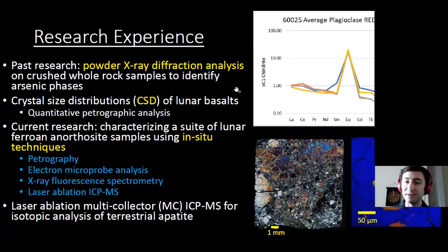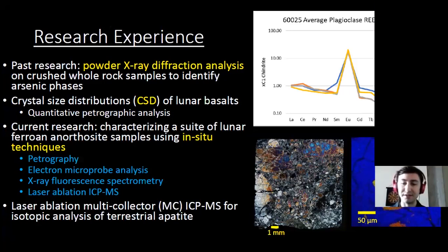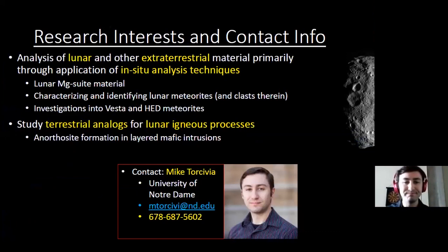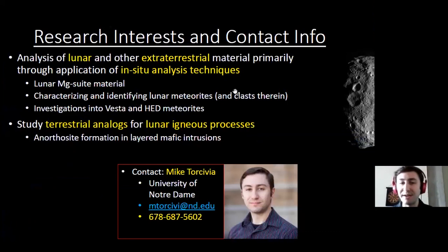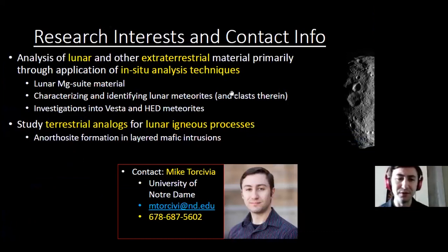On the right we have a few figures. On the top is a rare earth element plot of average plagioclase composition taken from different thin sections of sample 60025. On the bottom left is a photomicrograph of thin section 60025-273, and on the right is a false color image of a pyroxene grain taken using X-ray mapping. My research interests are primarily lunar and other extraterrestrial material, applying different in-situ analysis techniques to better characterize those samples. In the future, I'm looking at moving my project to other areas of the moon, specifically the Mg suite, and also characterizing material in lunar meteorites.